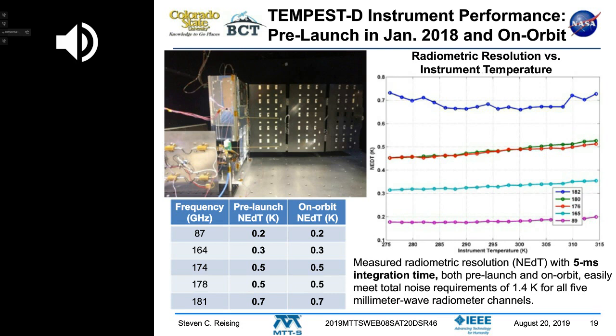NEDT is a measure of the radiometric resolution — the smallest change in input you can measure above the noise. A black body at room temperature is about 300 Kelvin, and the ocean is much colder. We measured the radiometric resolution over temperature and had very good agreement with on-orbit values.